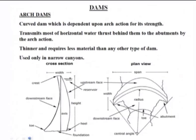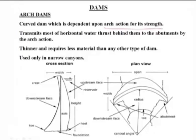The second type is the arch dam. These are curved dams which depend upon arch action for their strength. They transmit most of the horizontal water thrust behind them to the abutments by arch action. Whatever horizontal water pressure is coming, it is transmitted to the abutment by means of arch action.